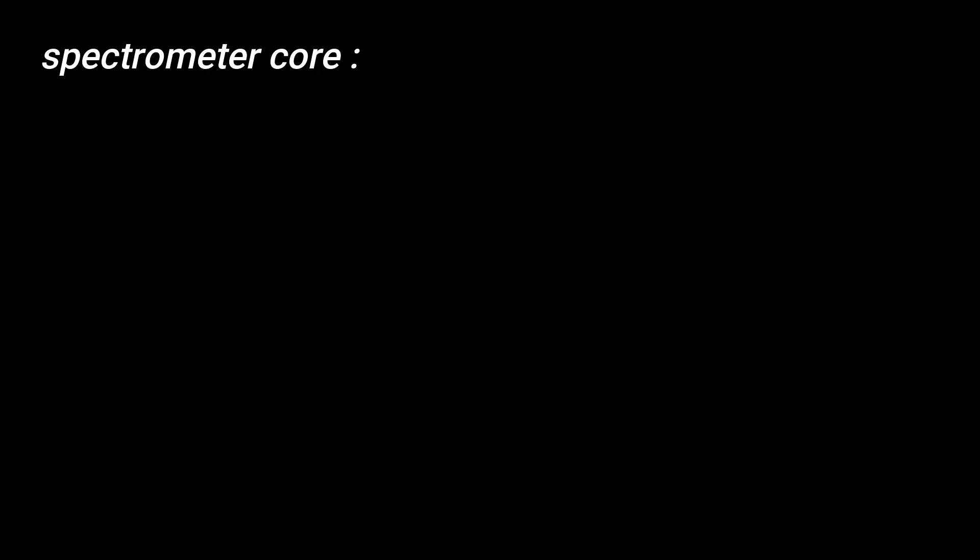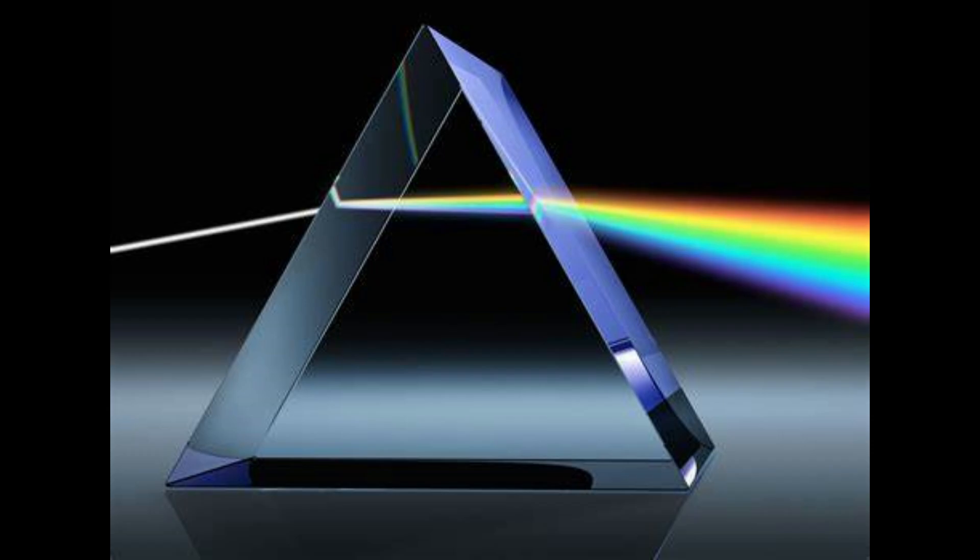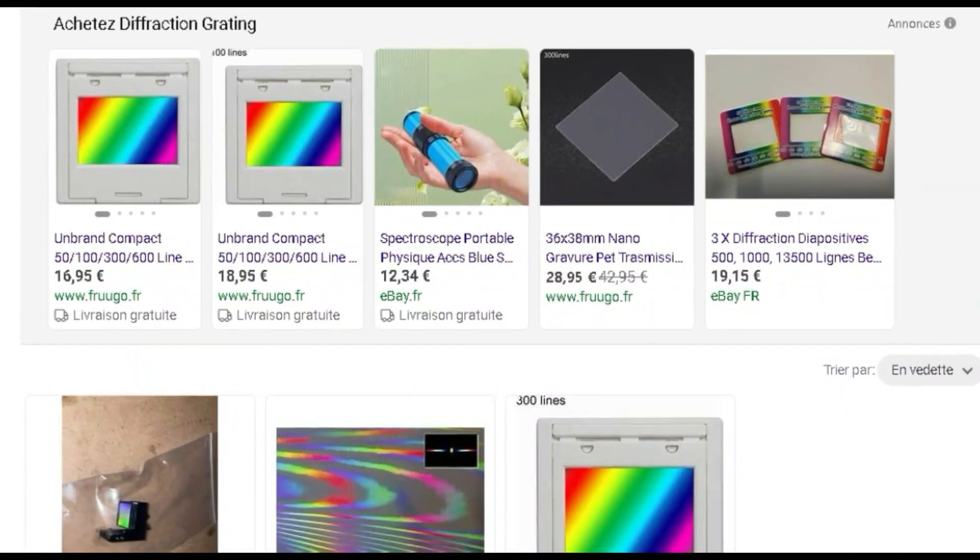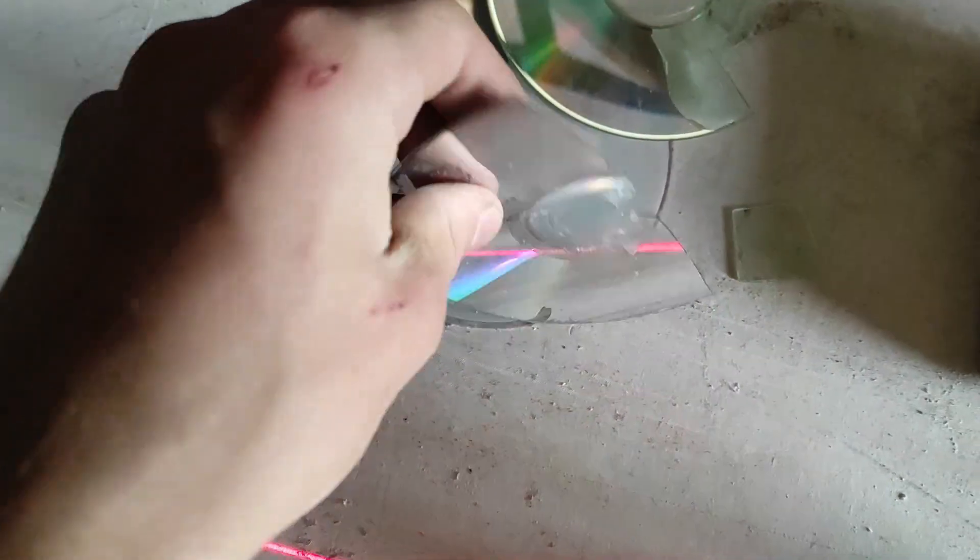The most important part is the diffraction grating. Basically, it's the same as a prism, but it's flat. It's the piece that allows the light to be separated into the rainbow. And you can buy one on internet, or you can also use a piece of DVD or CD like me.